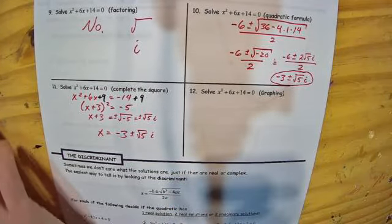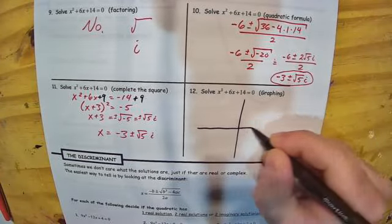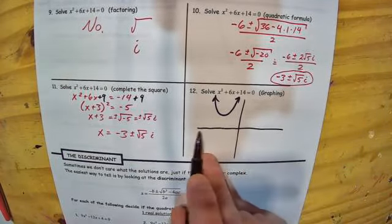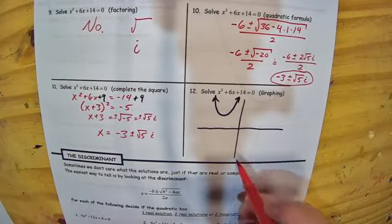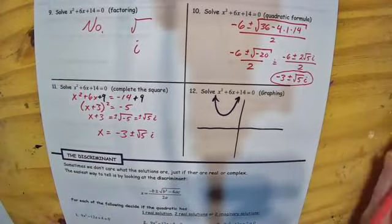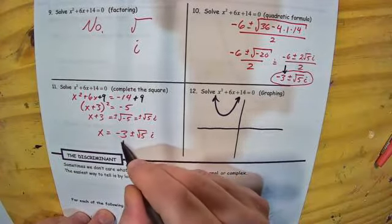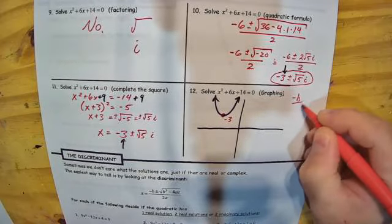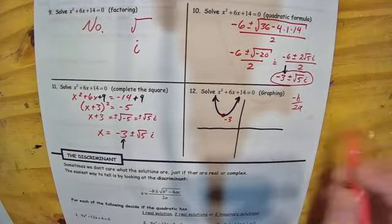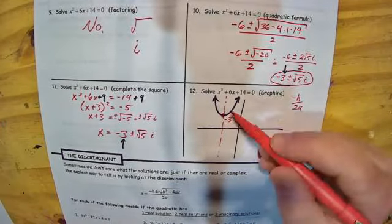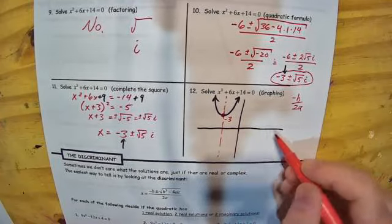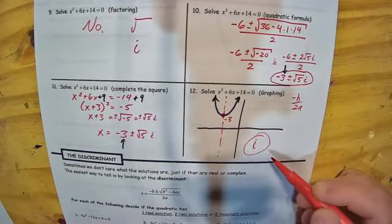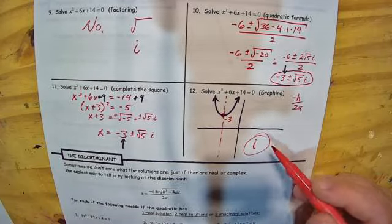Finally, if we go to the graph, something weird happens. If you graph this in Desmos or on a graphing calculator, the graph is never going to touch the x-axis. That's because there are no real numbers that are solutions to this equation. We can still find the vertex x-coordinate from the quadratic formula or completing the square — it's at negative 3. But because the graph never crosses the x-axis, that tells us we're going to have i's in our solution. From the graph alone, it's impossible to figure out what those imaginary solutions are.